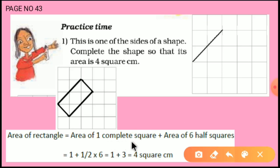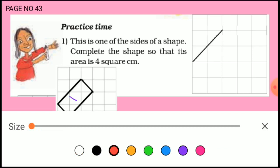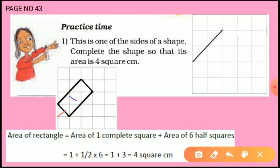Area of 1 complete square — this one here. And area of 6 half squares. Let's count the half squares: 1, 2, 3, 4, 5, 6. So 6 half squares are there.